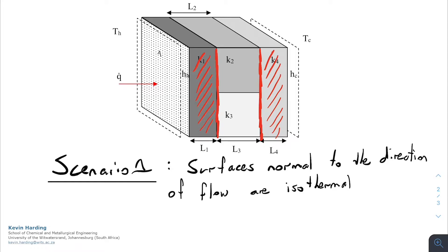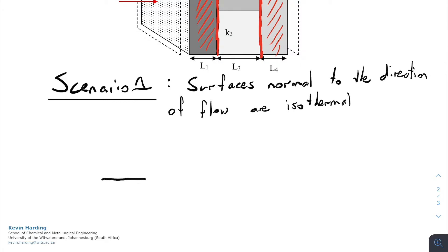If we have to draw this as a thermal resistance diagram what this means is that we are going to now have our first resistance which will be the convection. We will have conduction for slab one so that's the hot side convection, HH, the first slab.